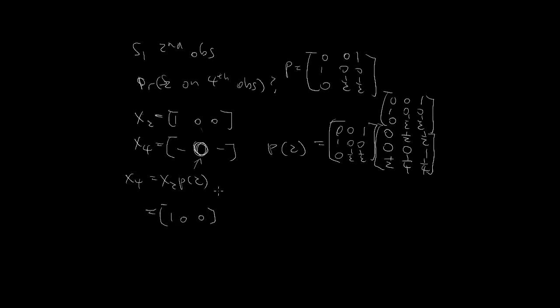So we can take 1 0 0 times 0, 1 half, 1 half, 0 0 1, 1 half, 1 fourth, 1 fourth. And here you will get 0, 1 half, and 1 half.